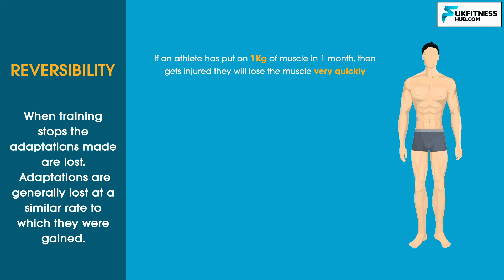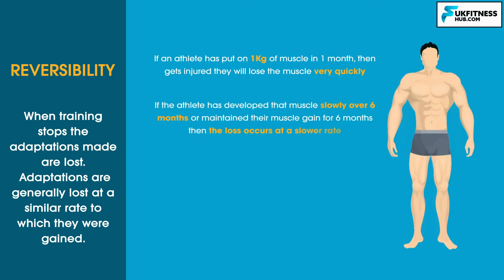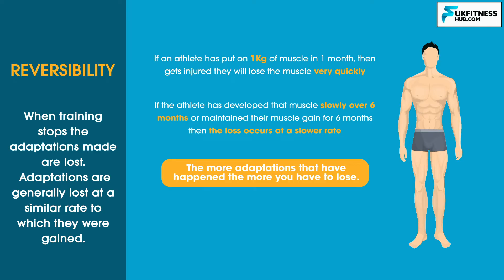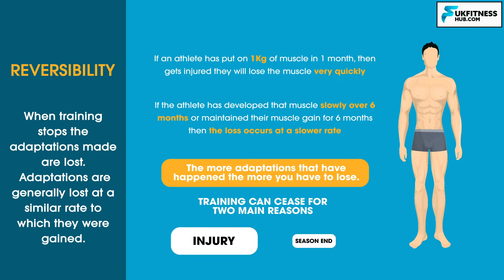However, if the athlete developed that muscle slowly over six months, or maintained their muscle gain for six months, then the loss occurs at a slower rate. The more adaptations that have occurred, the more you have to lose, so elite level athletes tend to lose more than recreational athletes because they have more to lose. Athletes need to avoid reversibility, which will occur if training ceases. Training could cease for multiple reasons, but the two main reasons are injury and being at the end of a playing season.